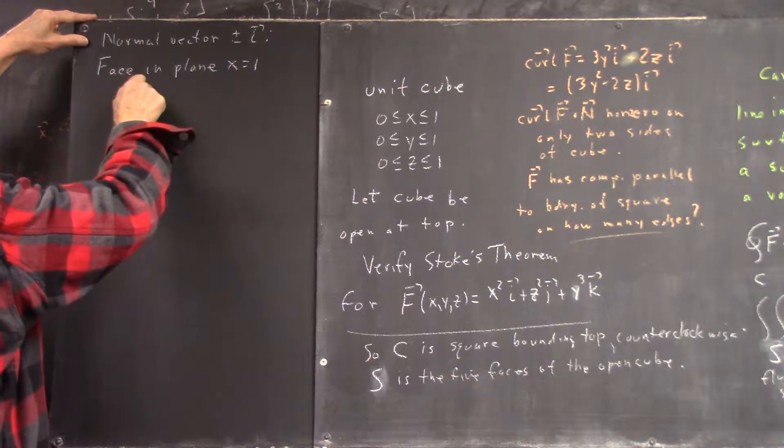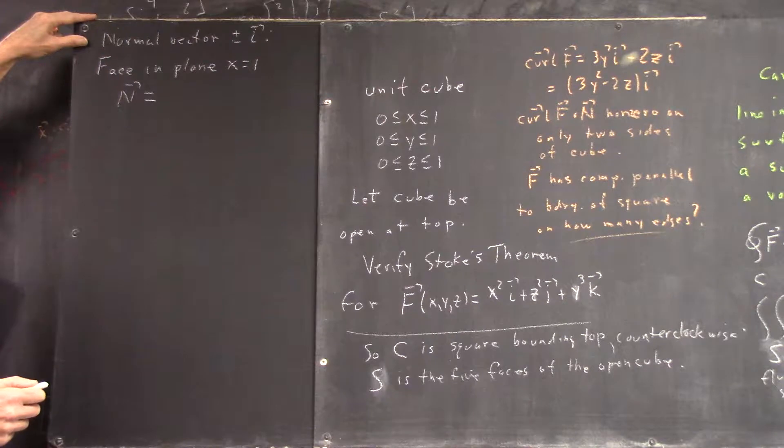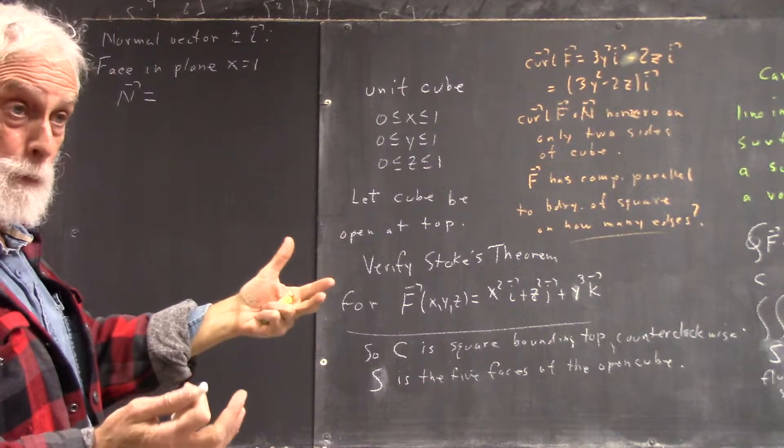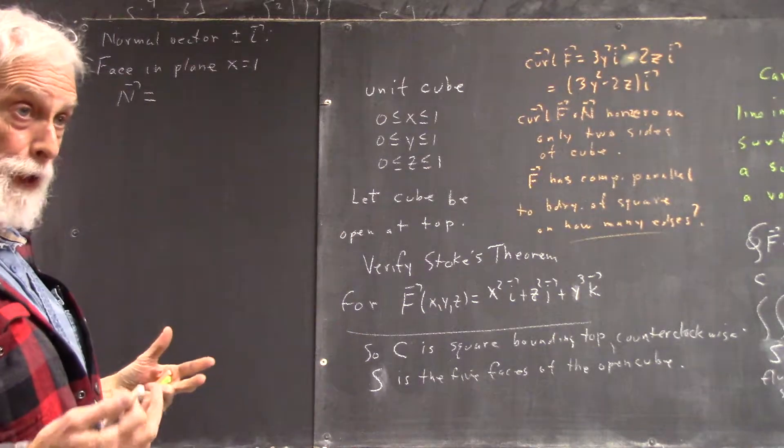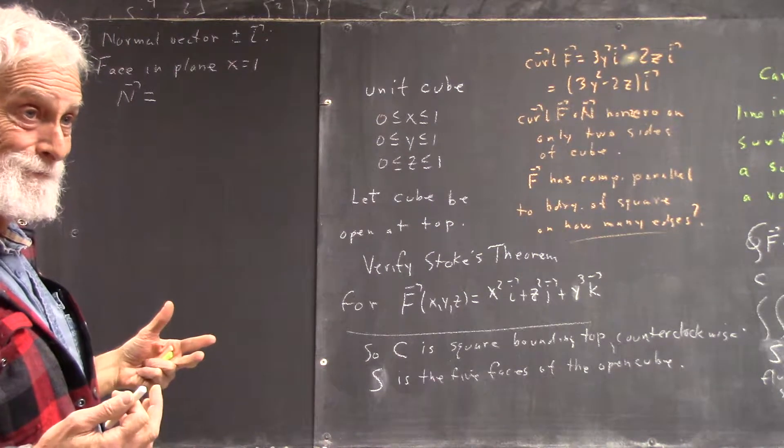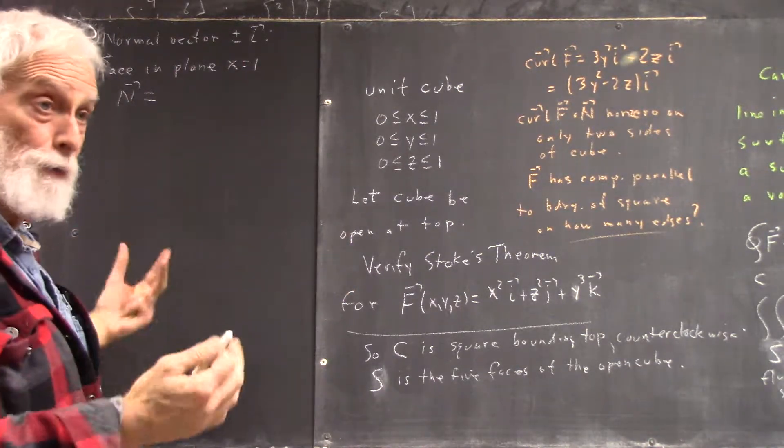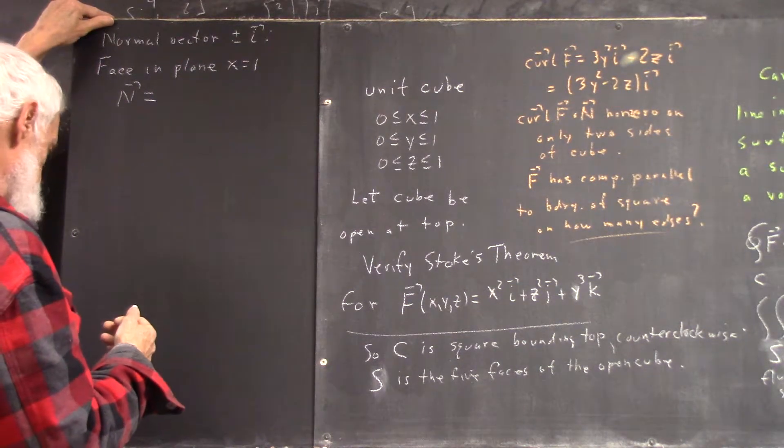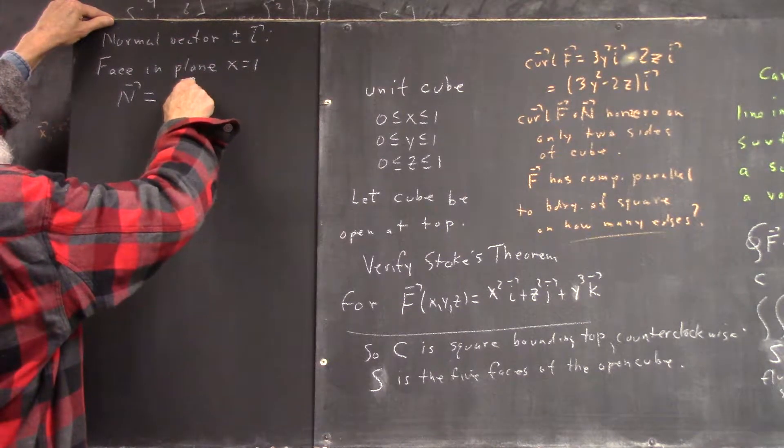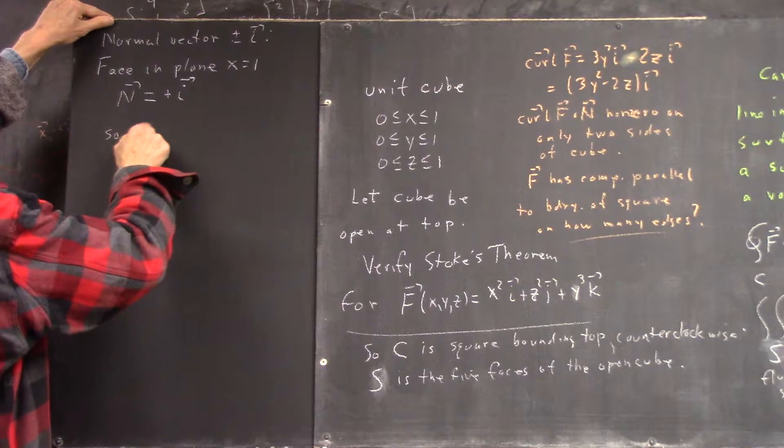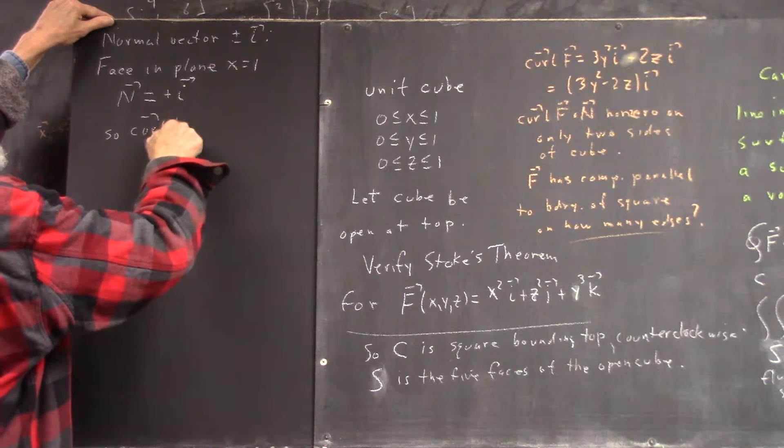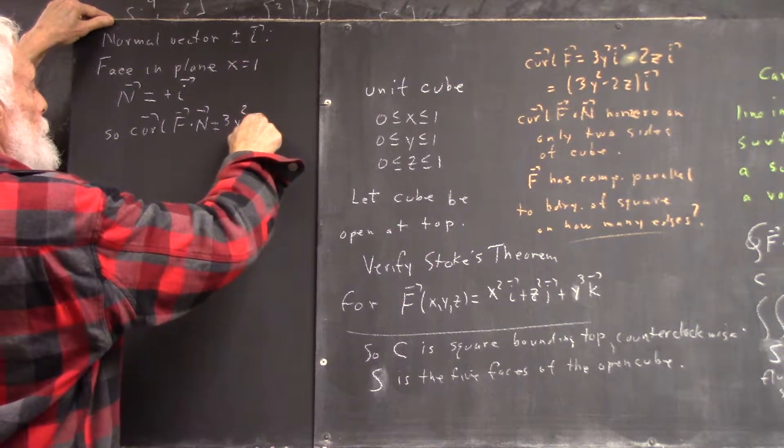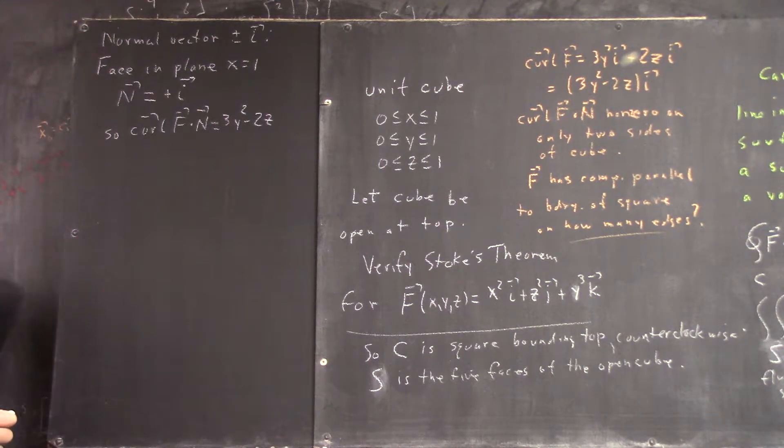We have the face in the plane X equals one. The normal vector is what? Well, in that plane, it's I. You can do the outward normal. Again, we're talking about inward and outward, which we can do because the surface is orientable, as is the curve around the boundary. So the normal is just I. So curl of F dot N is 3Y squared minus 2Z.